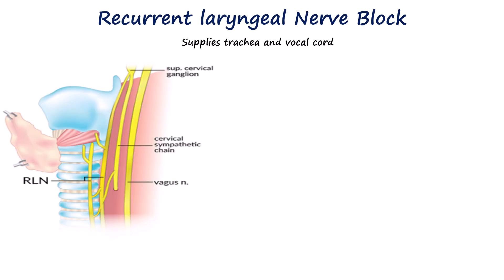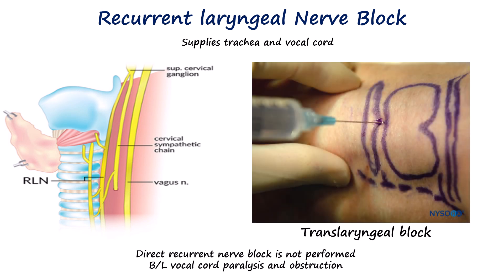The sensory innervation of the vocal cords and trachea is supplied by the recurrent laryngeal nerve, also a branch of the vagus nerve. Direct recurrent laryngeal nerve blocks are not performed as they can result in bilateral vocal cord paralysis and airway obstruction, since both motor and sensory fibers run together. Therefore, this nerve is blocked using the trans-laryngeal block.